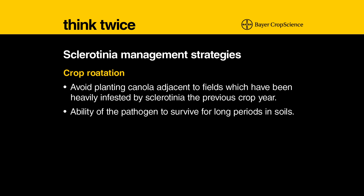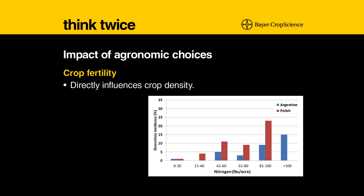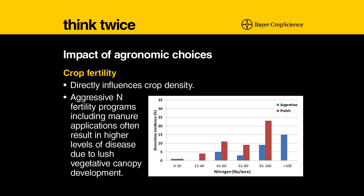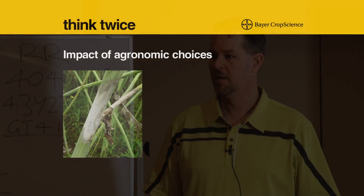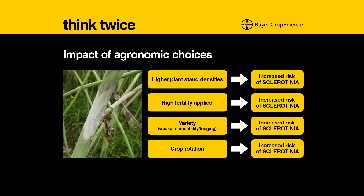Once you've got sclerotinia in your soil, the chance of it reoccurring the next time the weather is right is pretty good. Fertility also directly influences crop density. So if you've got an aggressive fertility program and you're really trying to go for high yield in high moisture zones, that will increase your risk of disease development and it often results in higher levels of disease due to lush canopy development. This illustrates the impact of agronomic choices and how they influence the risk of sclerotinia.